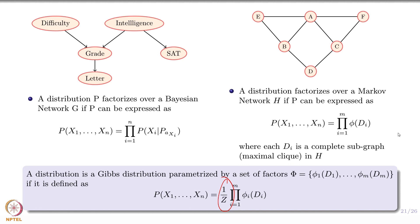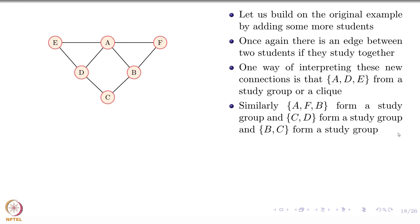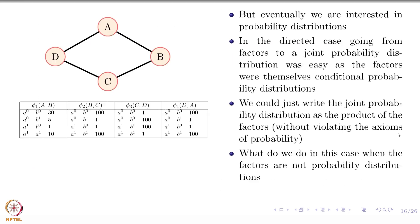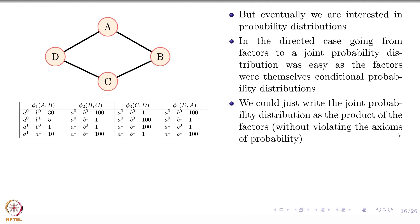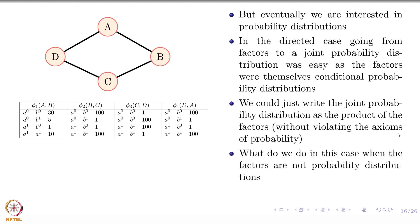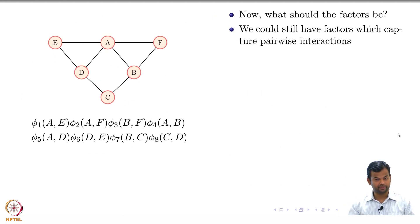On the left-hand side you see the factorization for the Bayesian network, where factors are conditional probability distributions. On the right-hand side you see a factorization for the Markov network, where the factors are not probability distributions — they are known as clique potentials. These need not take values between 0 and 1; they can be arbitrary values. The table looks very much like a probability distribution except that it just captures affinity between different possible assignments of the random variables.